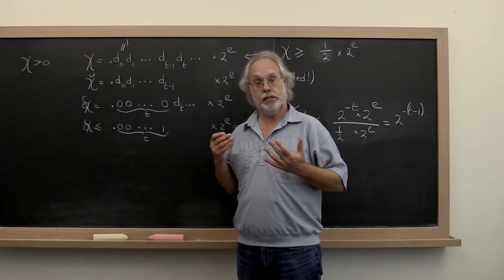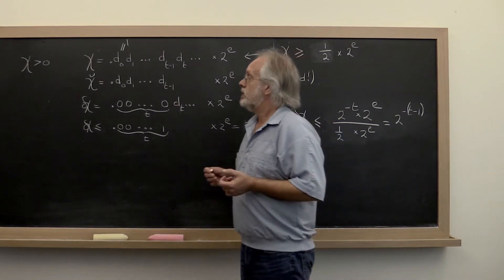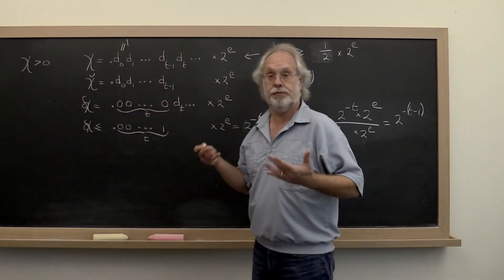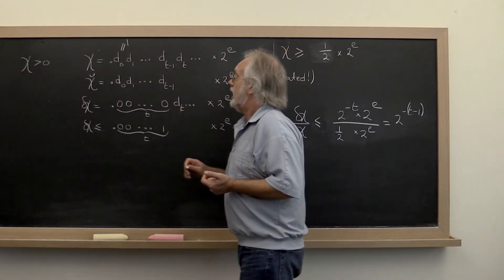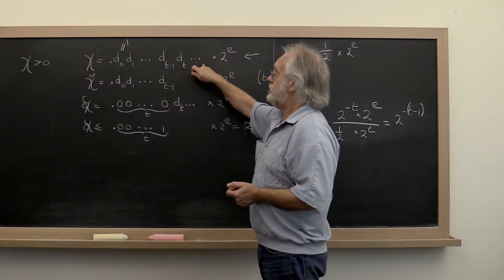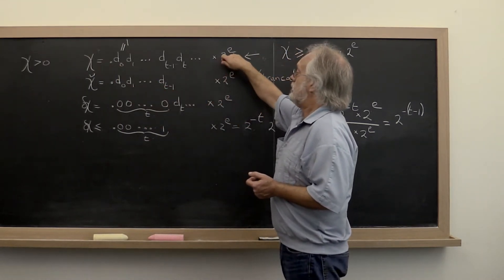Let's look at what kind of error is introduced when we store a real number as a floating-point number. So let's assume that the number we start with is a positive real number. And that number can be expressed in terms of a bunch of binary digits after the period times two to some exponent.